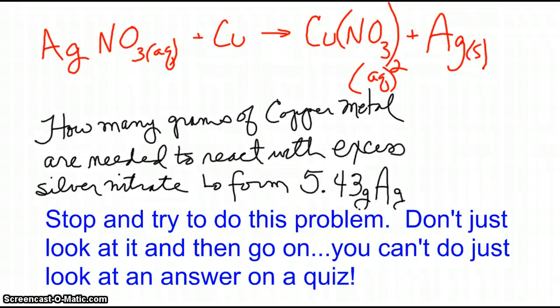So the problem is, calculate the mass of copper metal that you need to react with excess silver nitrate. Let's say you needed 5.43 grams of silver for some reason. How much copper would you need to put into the silver nitrate in order to produce this much silver? So stop, do the stoichiometry problem, before going on.